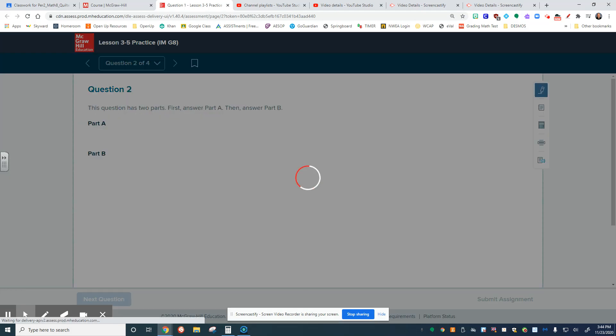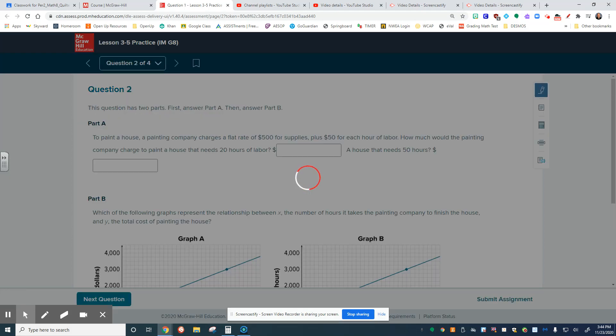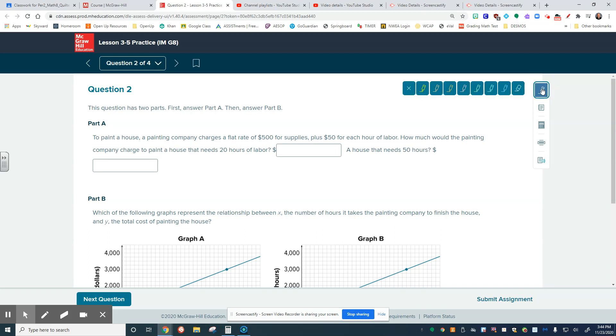Number two, for this question, you have a house painting company that's charging $500 for supplies. That's kind of a big deal right there. $500 for supplies, $50 per hour of labor. How much money would the company cost for a house that needs 20 hours of labor? One that needs 50 hours of labor.